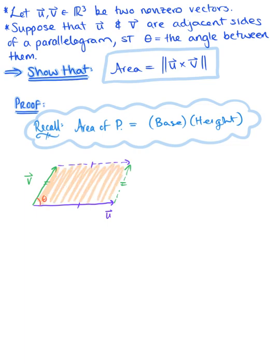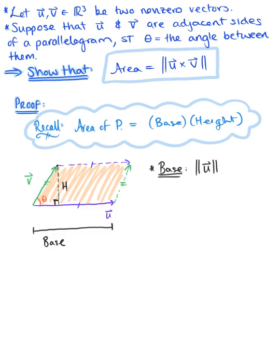Thinking about the geometric formula for the area of a parallelogram and looking at our illustration, we can see that vector u represents our base. From the terminal point of vector v, we drop down until we intersect vector u at a 90-degree angle — that segment represents our height. Since the base is associated with vector u, the length of the base is the magnitude of vector u.